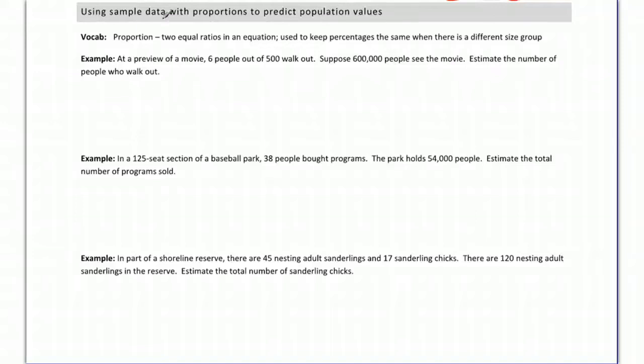In this section we're going to look at using sample data with proportions to predict our population values. So we're going to take data from a good sample, set up a proportion, and use it to predict how many people in the whole population are going to do something.